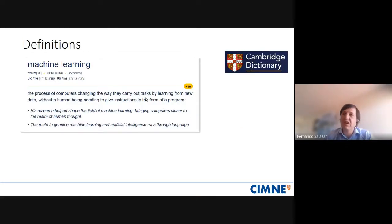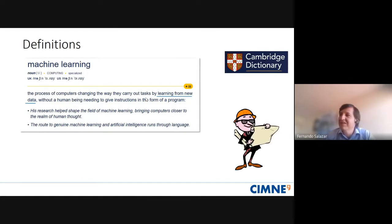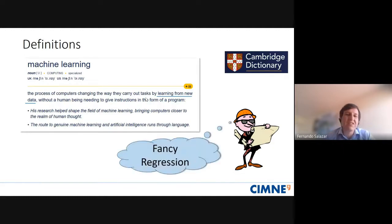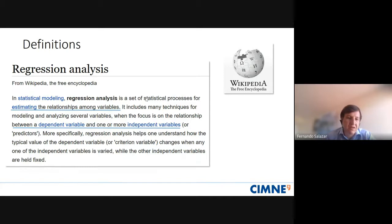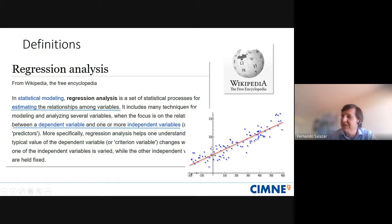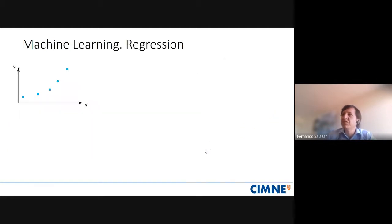Machine learning, according to the dictionary, is about learning from new data — that's the key element. From our view, machine learning is quite similar to a fancy regression. Regression is about estimating relationships among variables in a system — between some dependent variable and one or more independent variables. Everyone has had to deal with a cloud of points and wanted to fit some function to those points. So what is the difference between regression and machine learning? Let's go to a very simple example.